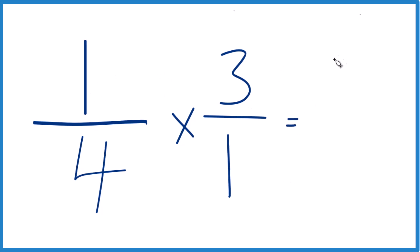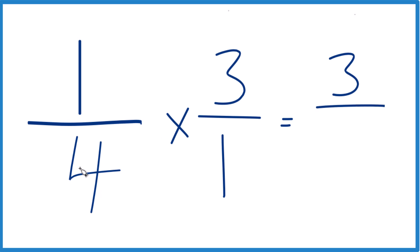One times three, that equals three, and four times one, that equals four. So when we have fractions and we're multiplying them, we just multiply the numerators, then the denominators, and three times one-fourth of a cup,